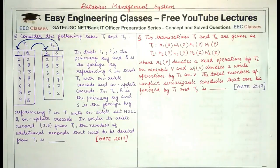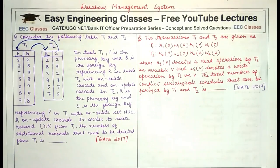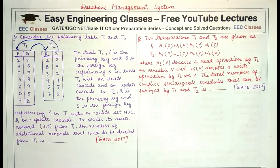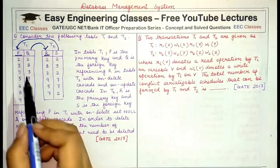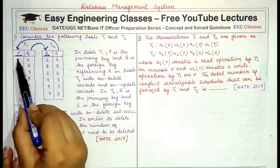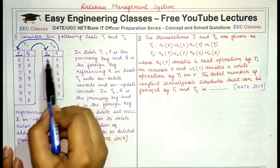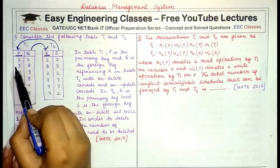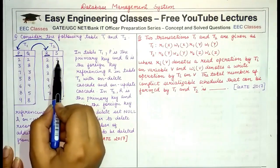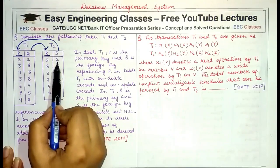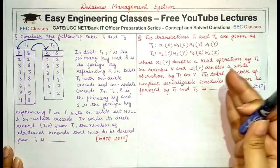To correctly answer this question you must know what ON DELETE CASCADE means. ON DELETE CASCADE means that if a value of the primary key is deleted, then the corresponding value in the foreign key referencing that primary key will also be deleted. Cascade means take the deletion forward to the foreign key as well.